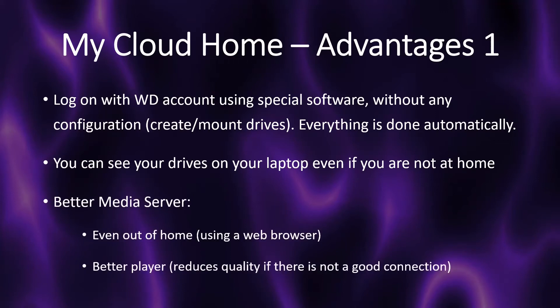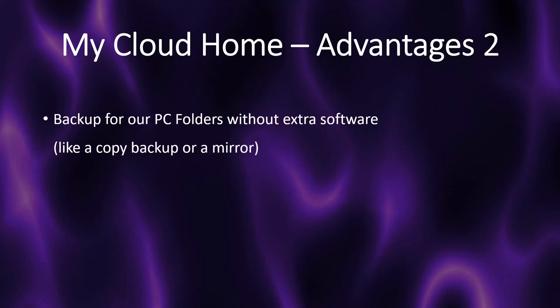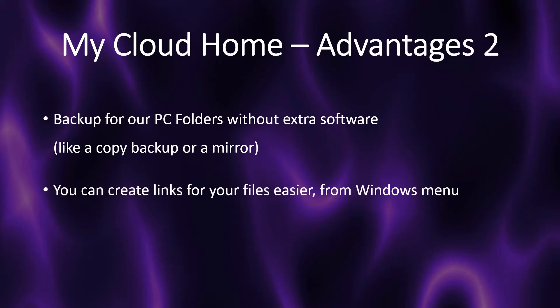MyCloud Home has a better media server — it can serve files even outside of home and can reduce quality if the connection is not good enough, especially when you're outside. You can back up your PC folders without extra backup software, even when outside your house, using just one software. This backup creates a copy of the files you want; however, it does not keep version history like MyCloud. You can easily create shared or public links to your files with just a right-click in Windows Explorer, just like OneDrive. With MyCloud, you have to use the web interface or special software for this.